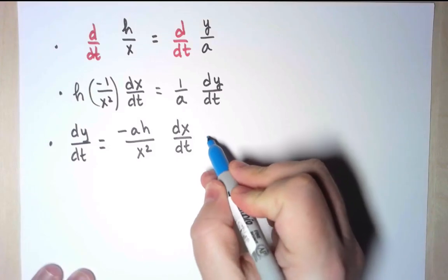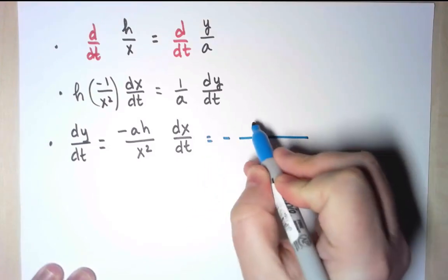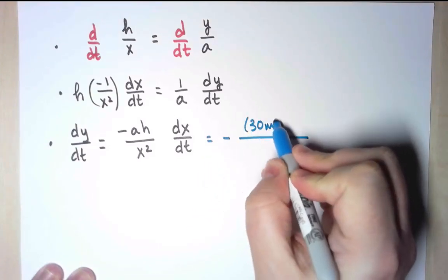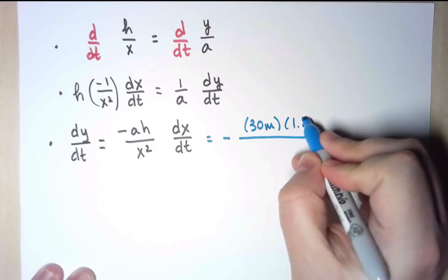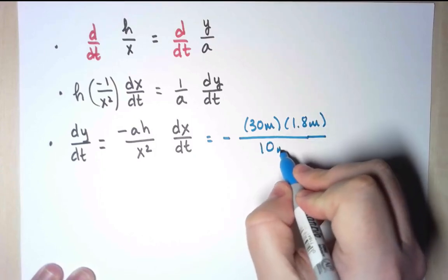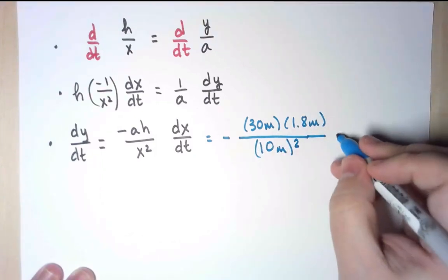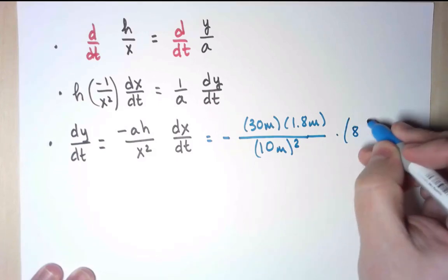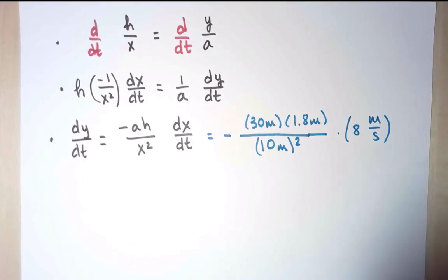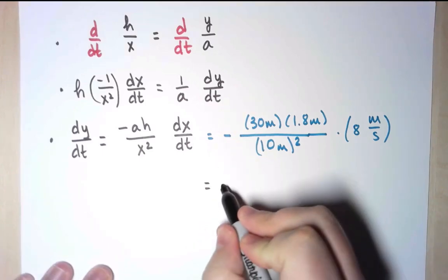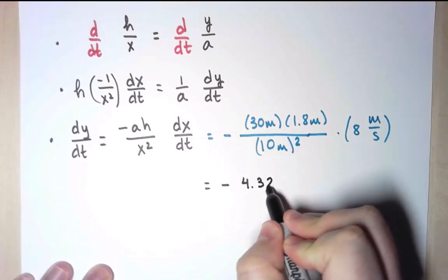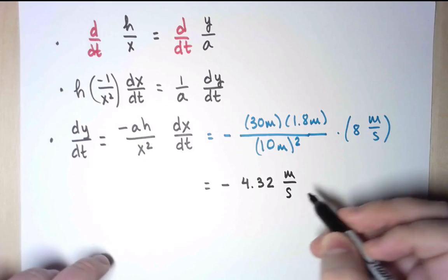So let's go ahead and substitute. This is going to be equal to minus a is 30 meters, h is 1.8 meters, x is 10 meters squared, and the derivative of x with respect to time is 8 meters per second. And now simply do the computation, and this computation comes out to be minus 4.32 meters per second.